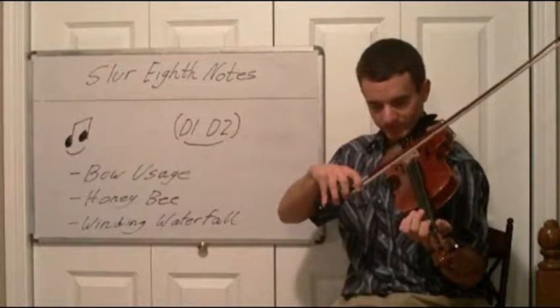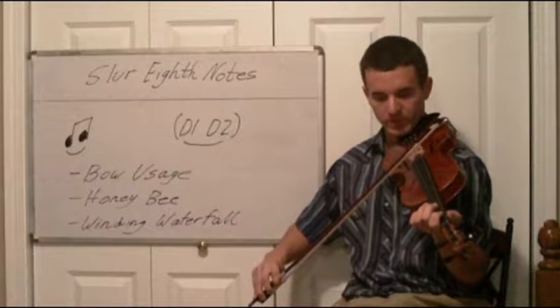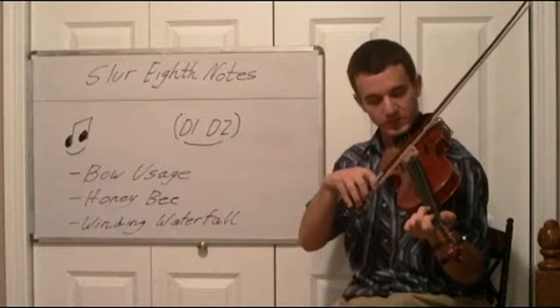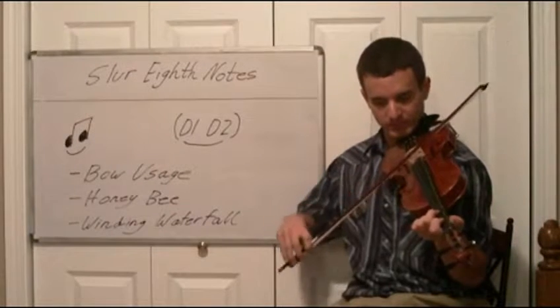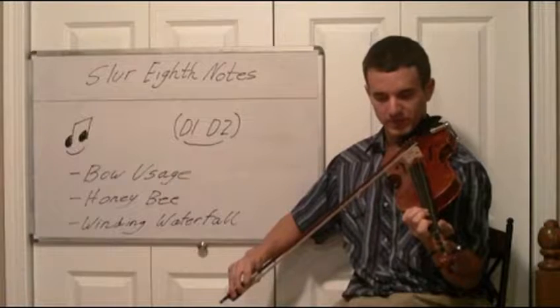And then D1. Pivot over the A. And we're gonna do two eighth notes slurred, A0 A1. Then A2 quarter note. Then right next to the two is going to be A3 slurred to A2 eighth note.